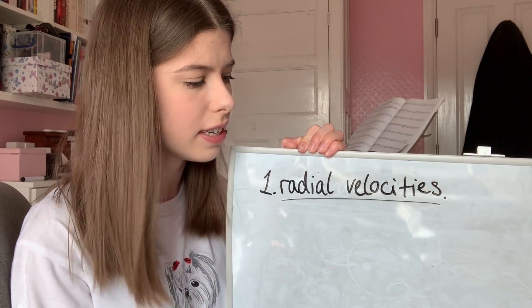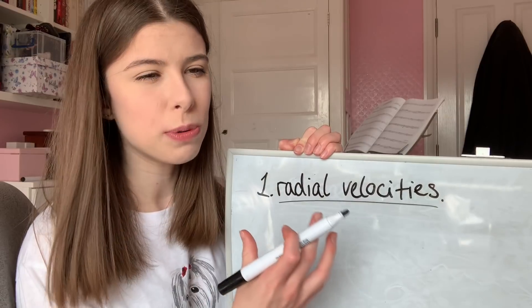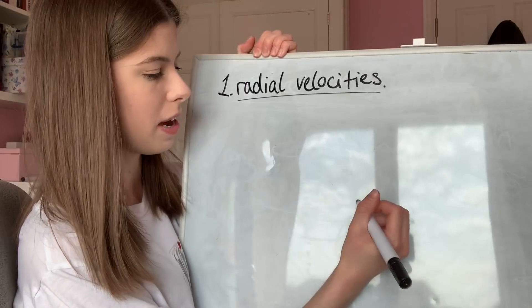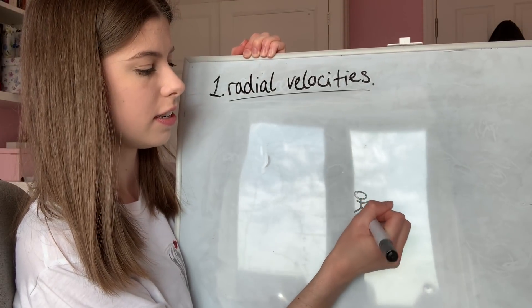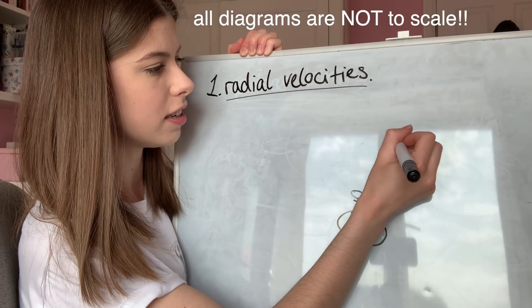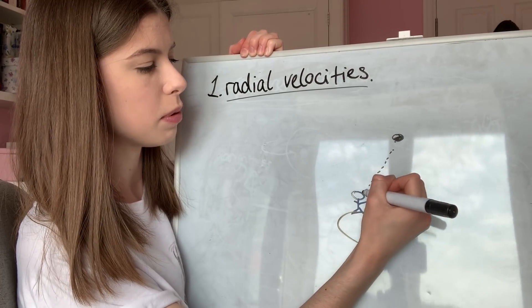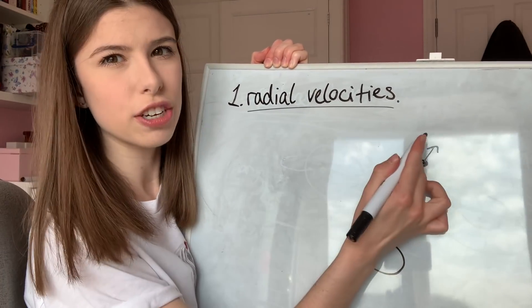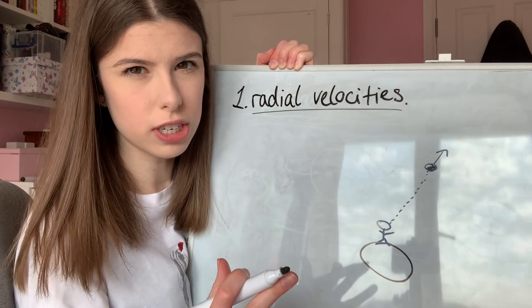An object's radial velocity is the speed with which it's moving away from the Earth. Imagine we as an observer are standing on the Earth, here's a distant star, here's the line of sight between us and the star - a straight line. Its speed in that direction is its radial velocity.